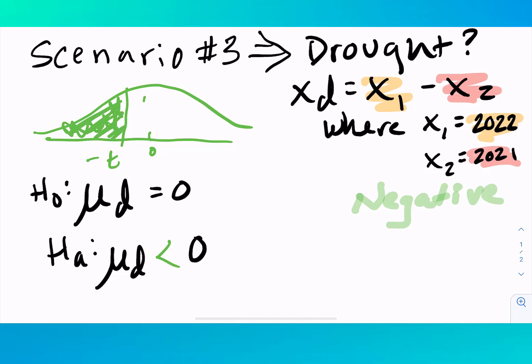So hopefully that helps you to understand how you would write out your null and alternative hypotheses. I will explain this more because we will do three full examples using the FRED method for paired data. See you in future videos.